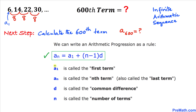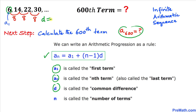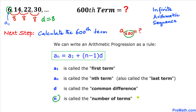In this formula, a sub 1 is our very first term — in our case that is 6. A sub n is the nth term, so in our case a sub 600 is what we want to find. D is our common difference, which in our case is 8. And n is the number of terms, which in our case is 600.